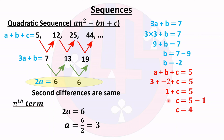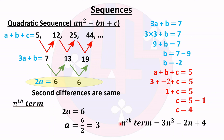Now we substitute the values of a, b, and c into the general format an² + bn + c. The nth term is equal to 3n² − 2n + 4. We can verify: a = 3, b = −2, and c = 4.